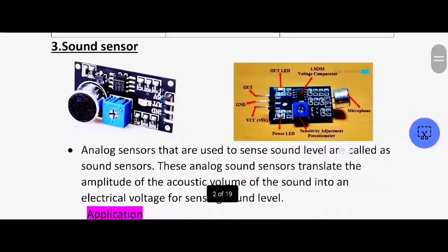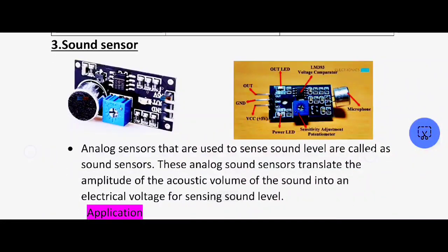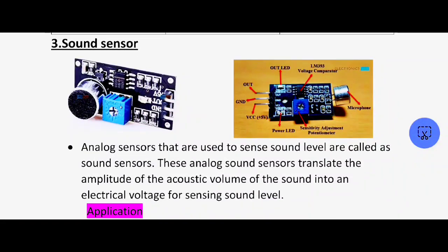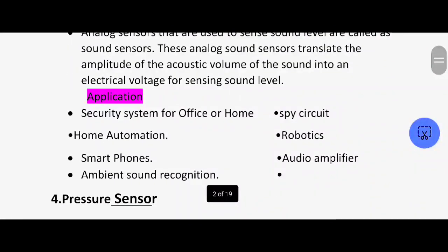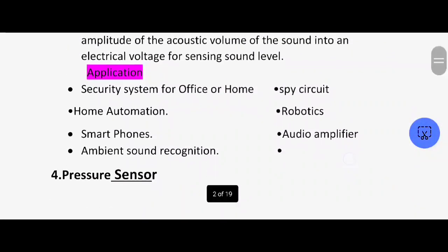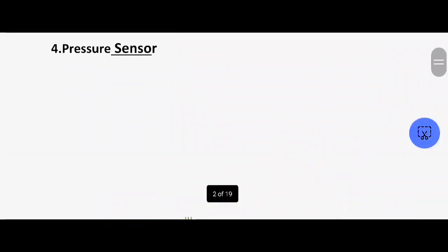Next one is the sound sensor. The sound sensor measures sound level. These analog sound sensors translate the amplitude of the acoustic volume of the sound into an electrical voltage for sensing sound level.